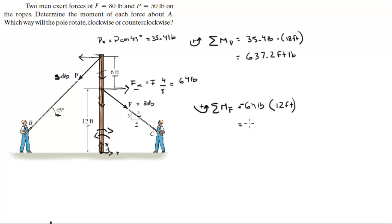And it comes out to be negative 768 foot pounds. So as you can see, 637 minus 768, this one is greater. Therefore it's going to end up turning clockwise. Let me write it: rotates clockwise.